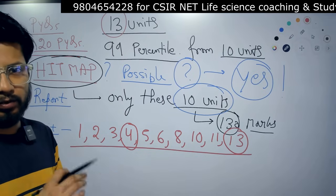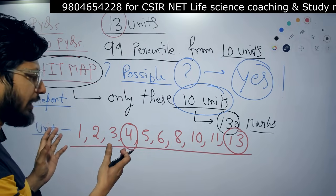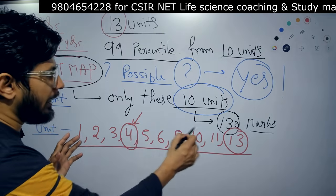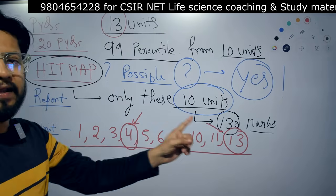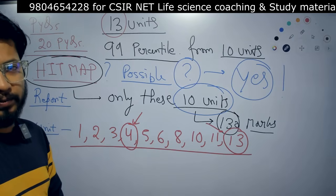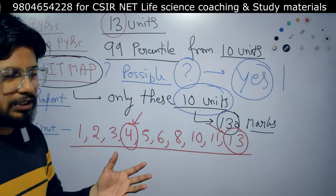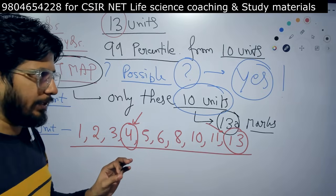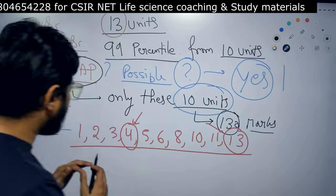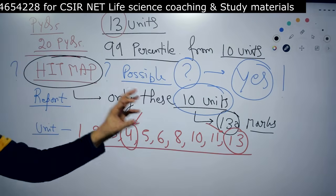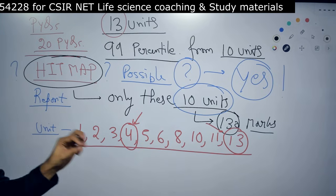Economical means the time invested to study those units and the outcome - the number of questions to attend from the unit - are equal. Unit 4 and 13 are less economical due to their high complexity and huge syllabus. The rest of the units are much more economical to study.